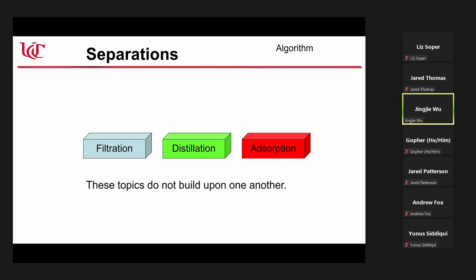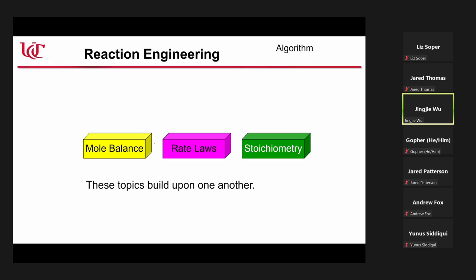This is our second lecture. The algorithm — so for example, you have learned separation courses, where you have several methods: filtration, distillation, absorption. These building blocks don't build upon one another — they are independent. However, for reaction engineering, what we have learned now is molar balance, and we are going to learn rate laws and stoichiometry later. These topics build upon one another.